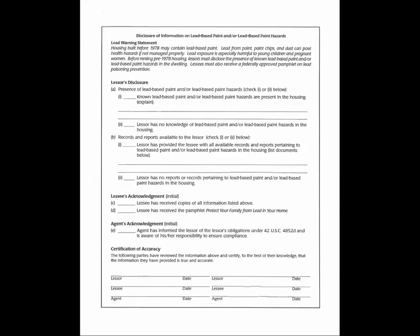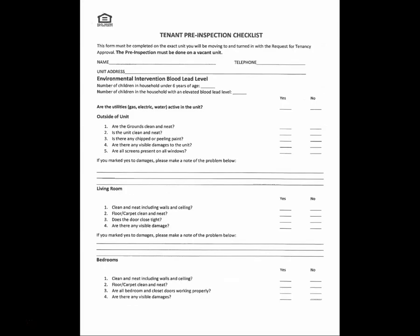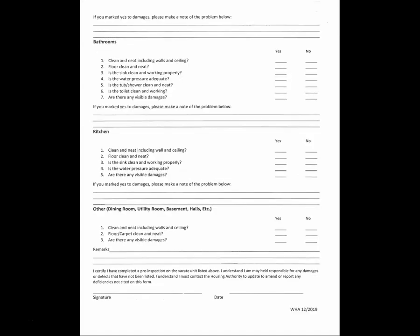If the unit does not pass the initial inspection, the landlord will be given a list of repairs to correct and then the landlord will contact the inspector for a re-inspection. If the landlord chooses not to complete the repairs or move forward with the HCV process, you must request another RFTA packet and the time on your voucher will start back up. Do not sign a lease with the landlord until the unit has passed inspection and your Housing Specialist has contacted you and the landlord for the next step.